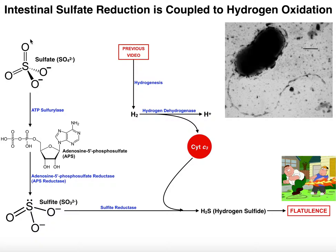The sulfate is going to be ligated to an AMP through the action of the enzyme ATP sulfurylase. This is actually going to utilize an ATP — we're going to lose pyrophosphate — and what's going to happen is this sulfate is going to become ligated to an adenosine monophosphate. When the sulfur is actually bound to this phosphate, it gets a new name: adenosine 5' phosphosulfate, or APS.